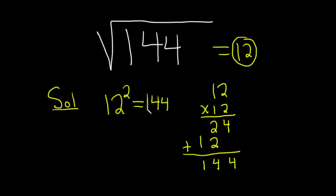So because 12 squared is 144, we know that the square root of 144 is equal to 12.